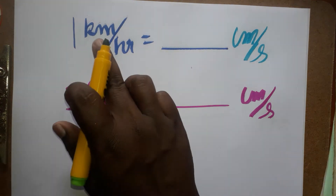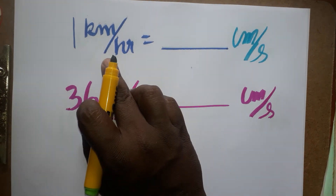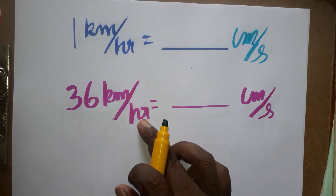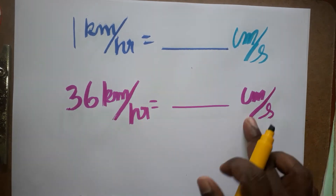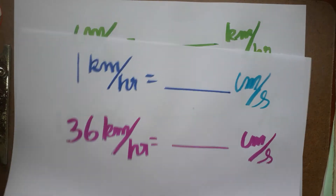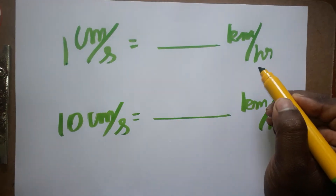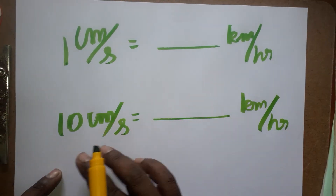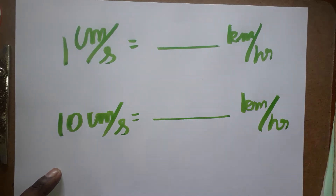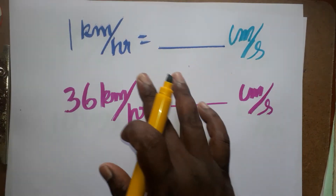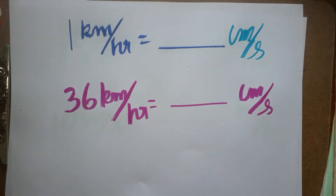Hello students, today we are going to learn how to convert from kilometer per hour to centimeter per second. For example, 36 kilometer per hour is equal to dash centimeter per second. The other example is 1 centimeter per second to dash kilometer per hour, and 10 centimeter per second is equal to dash kilometer per hour. This is what we are going to discuss.